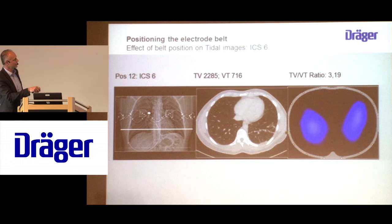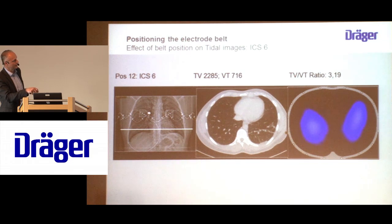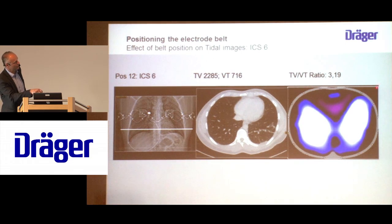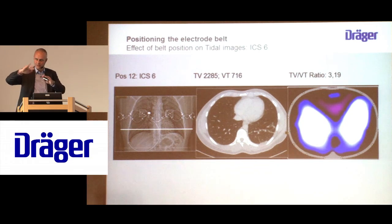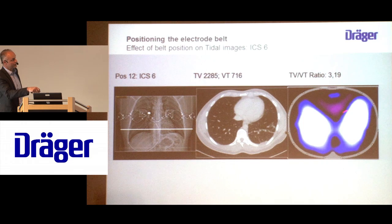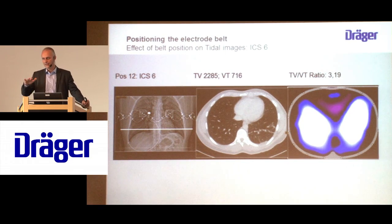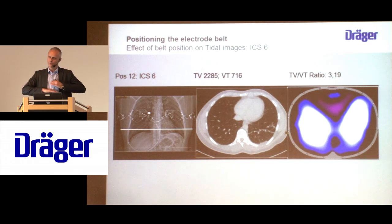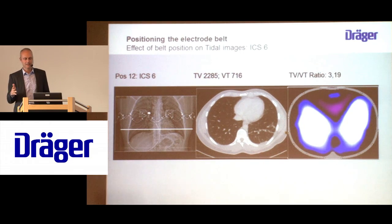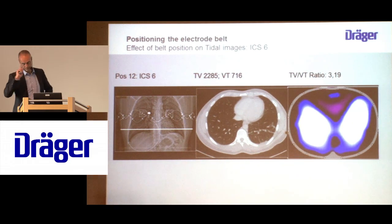At intercostal space 6, you can already see the ratio between the tidal volume and the tidal variation going down, because this mediastinal area is getting even larger. When there is less ventilation and these purple spots show a kind of phase opposition, which is subtracted from the ventilation signal, this ratio decreases. This is especially relevant if you intend to make PEEP changes: if you attached the belt at a high PEEP level and then reduce PEEP, the diaphragm distance to the belt changes. If you're too low, this can be misleading — something even some EIT researchers have not been aware of.